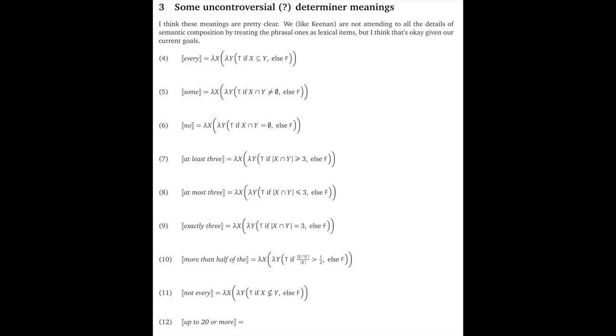And then we get into determiners that are built from cardinality tests. I think these meanings are pretty clear. The controversy here might be that we're not attending to all the details of semantic composition, since we're treating these obviously phrasal elements as though they were lexical items. That should worry you as a compositional semanticist, but I think it's okay given our current goals, so we'll press on. So, at least three, as a lexical item, tests whether the cardinality of the intersection has at least three entities in it.